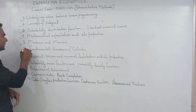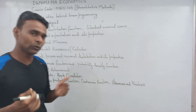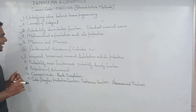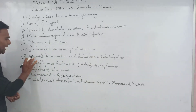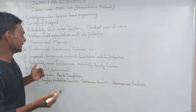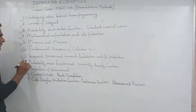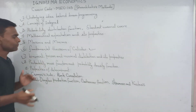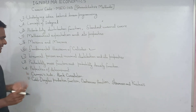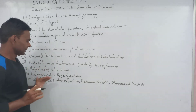What do you understand by the simplifying principle in statistical economics? The binomial, Poisson, and normal distribution and their properties — probability distribution, coverage properties, and differences between probability mass function and probability density function. What do you understand by the determinant, and state its properties?